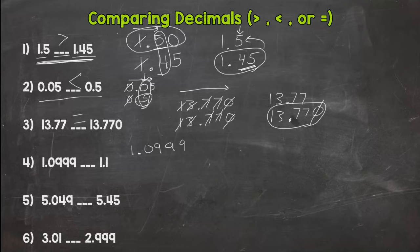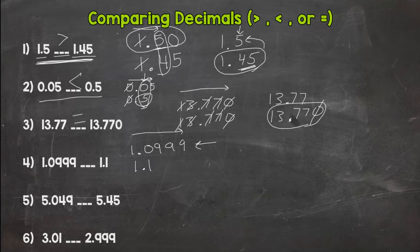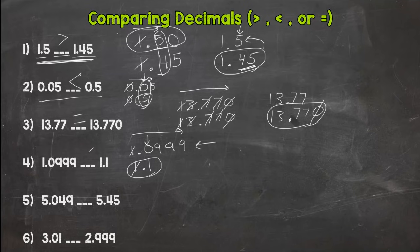Number four: we have a bunch of nines, then we have one and one tenth. Students starting out often say the number with lots of nines is greater because it has more numbers — that's not true. Go through the process, look left to right place by place. The ones are the same; check the tenths: zero compared to one — this number is greater because of the tenths place. So one and nine hundred ninety-nine ten-thousandths is less than one and one tenth.